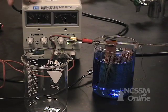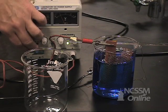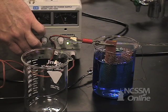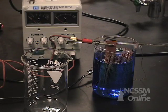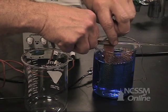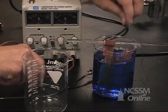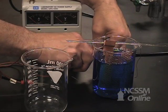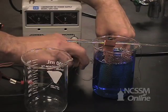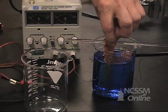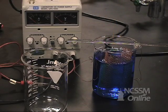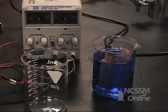After a period of time, we'll stop the experiment and our stopwatch. We'll have read the current from our power supply and the time from our stopwatch. We'll disconnect our leads. We'll remove the anode and the stirring rod.